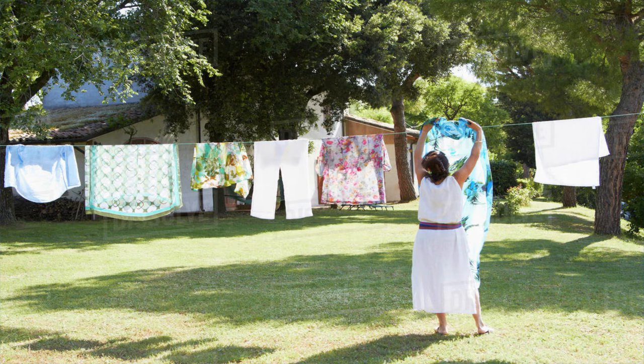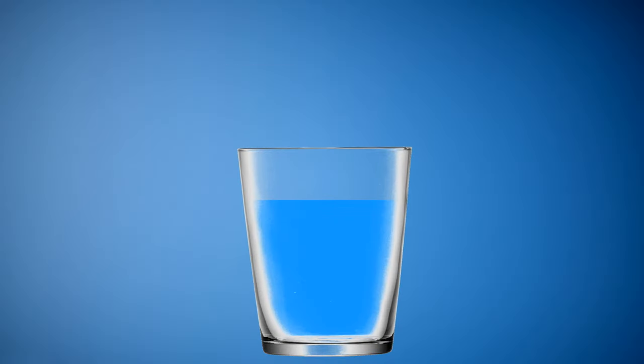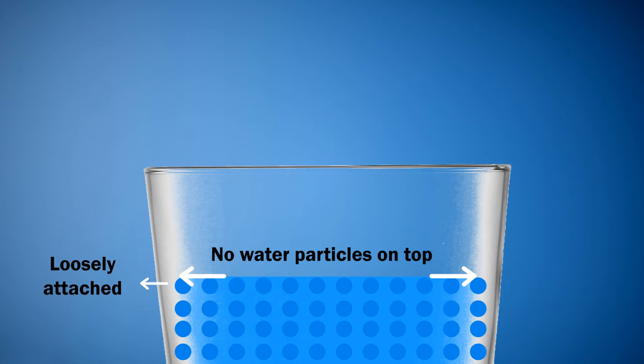Water disappears from our clothes way below 100 degrees centigrade because of evaporation. To understand it, let's analyze the top layer of water in a glass. Water particles on top layer have no water particles above them and they are loosely attached compared to particles at depth.